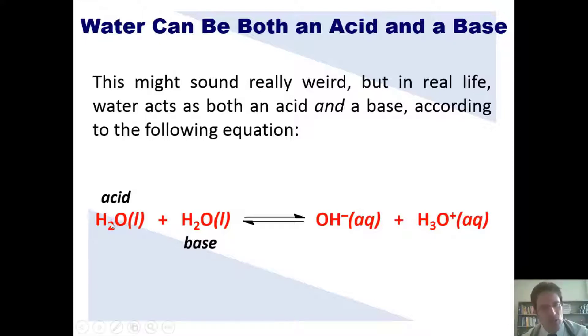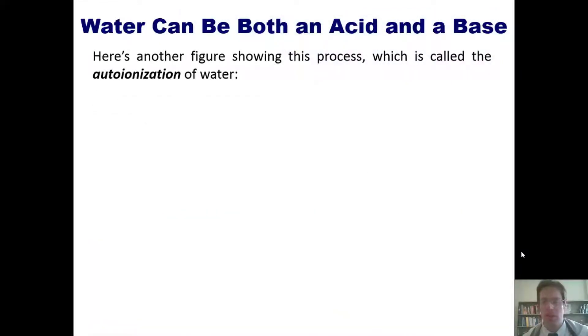From what we discussed in the last video, you can see that one of these molecules acts as an acid while the other acts as a base. By extension, hydroxide is the conjugate base, and hydronium is the conjugate acid. So once again, water can act both as an acid and as a base.